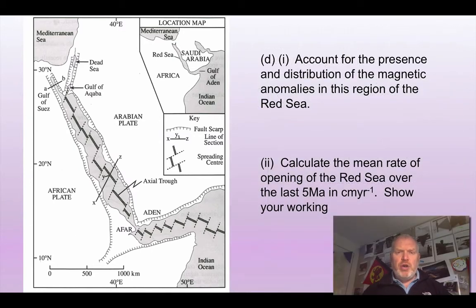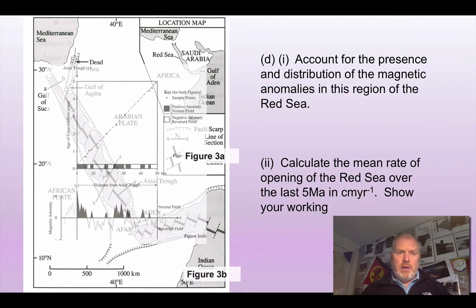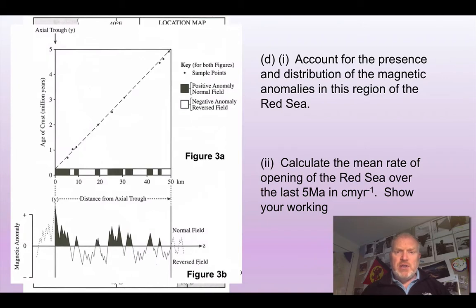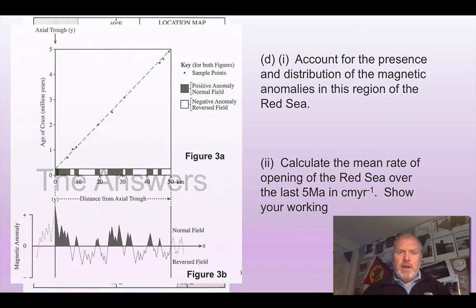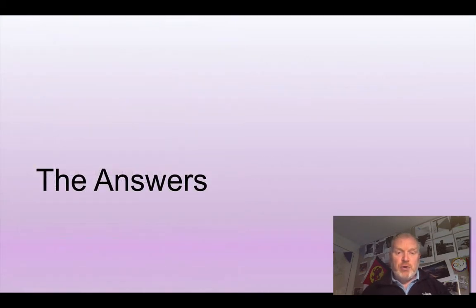Finally, we can look at some of the magnetic anomalies in this area. If we look at this graph — which goes from Y through to Z — we have a pattern of magnetic anomalies. Why are they there? How are they distributed? What does this tell us? And can we work out the mean rate of opening of the Red Sea? Now would be a good time to press pause and have a go at those questions.